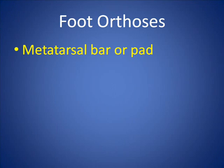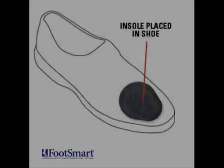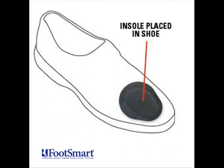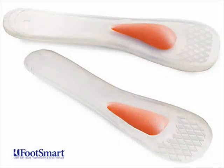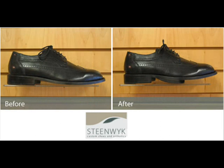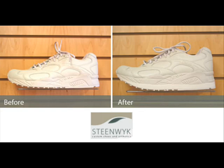Foot orthoses can also be designed to help with forefoot problems by shifting weight from the heads of the metatarsals to the shafts. Metatarsal pads are inserted in the shoe and metatarsal bars are attached to the sole of the shoe. Some insoles have a red metatarsal pad. A shoe can also be modified with an external metatarsal bar or a rocker bottom, which allows the shoe to rock from back to front as a person walks, taking pressure off of the metatarsal joints.